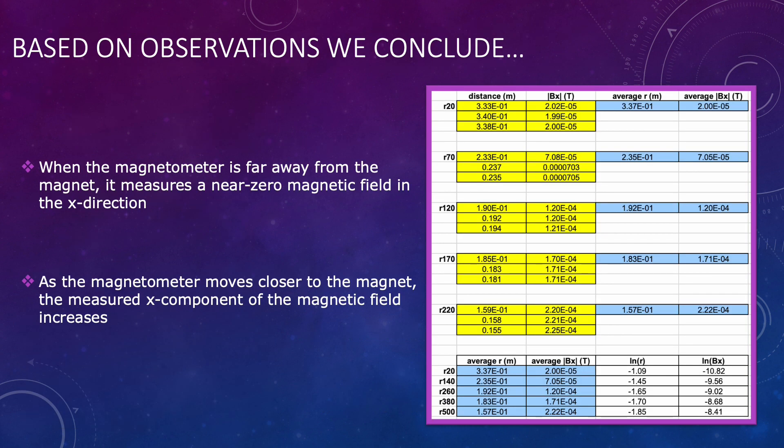As seen in my experimental measurements here we can observe that the magnetometer when it is far away from the magnet it measures a near zero magnetic field in the x direction and the closer the magnetometer sensor is to the magnet the stronger the magnetic field.